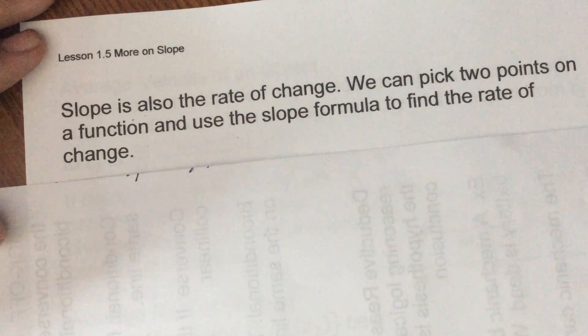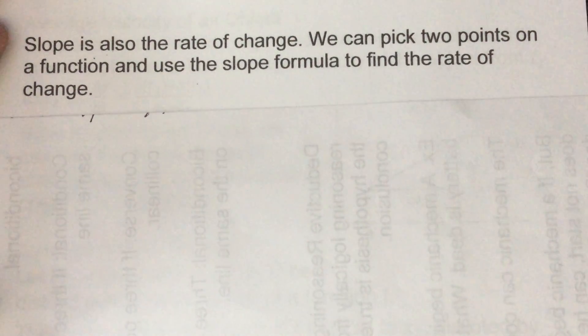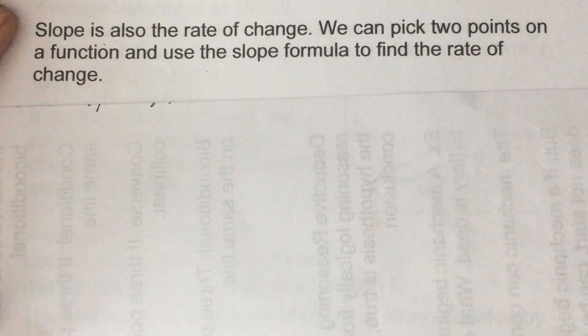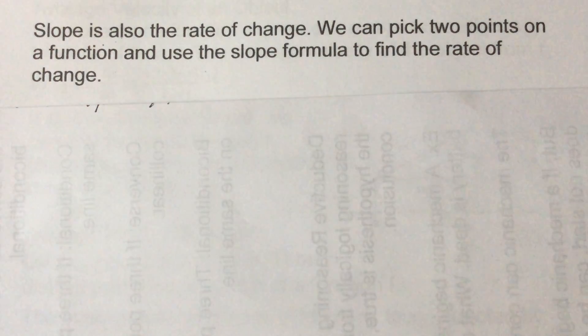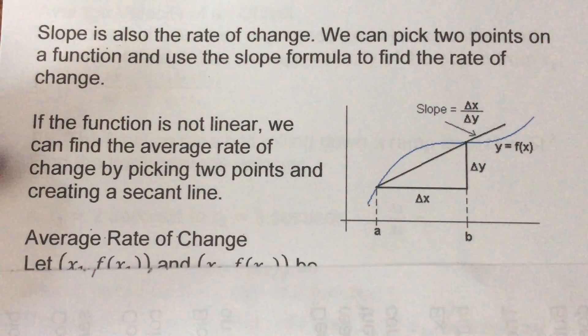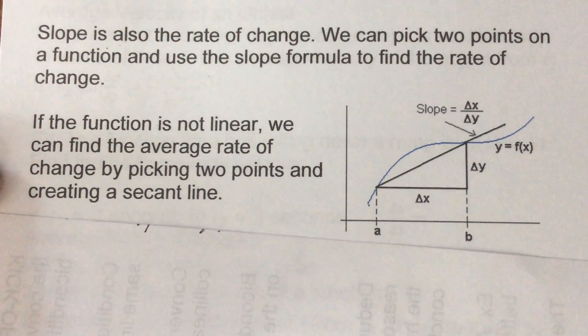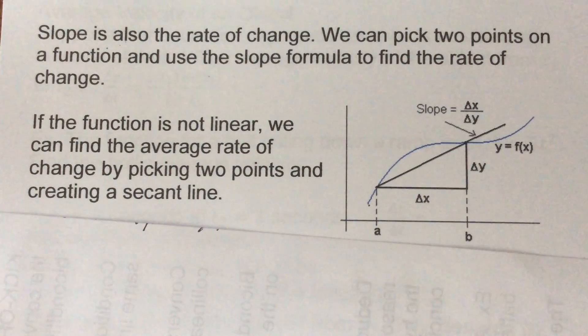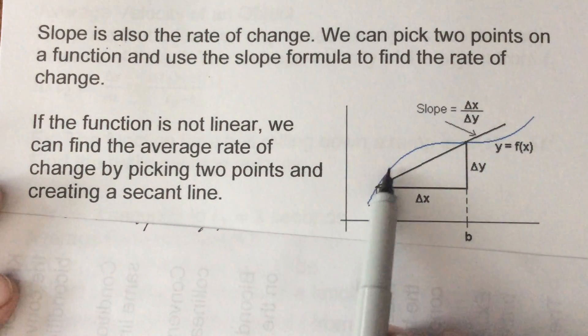Now slope can also be looked at as a rate of change of our graphs. Now that can also extend out to other equations as well and not just graphs, but we can pick two points on a function and use the slope formula to find the rate of change. So what we're really doing is if the function is not linear we can find the average rate of change by picking two points and creating a secant line. So that's what separates calculus - those of you taking calculus next year, calculus will be able to find the instant slope at any point on that curve.